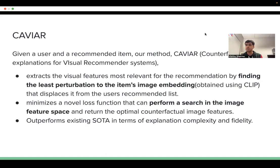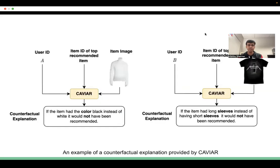We then see which features are present in the original image that are no longer present in the counterfactual image, and try to formulate an explanation around this difference. We see two examples of CAVIAR in action on this slide. In the example on the left, we have an original image of a white shirt with long sleeves. CAVIAR creates a black shirt with long sleeves and finds that this new item is no longer recommended to the user. It then formulates a counterfactual explanation that says: if the item had the color black instead of white, it would not have been recommended.